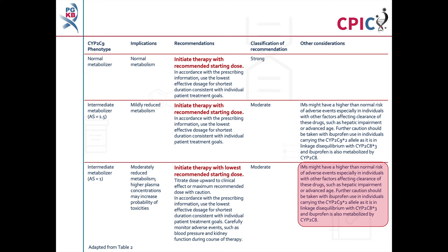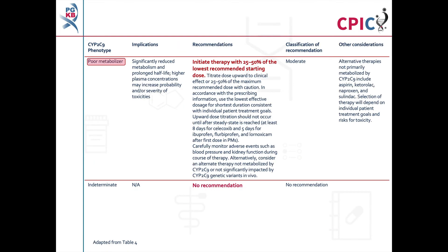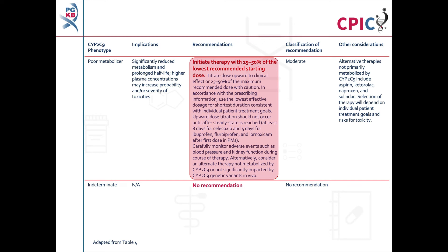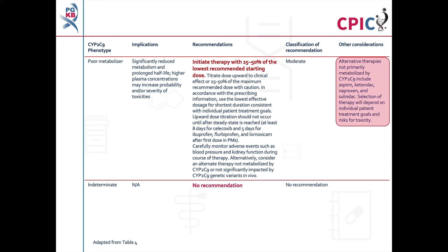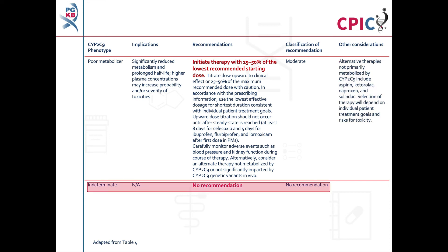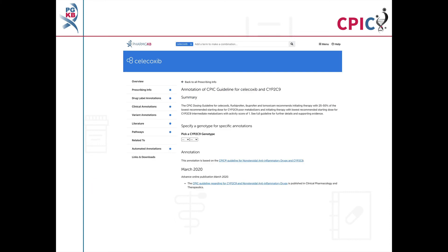CYP2C8 is also involved in the metabolism of ibuprofen. Patients with a CYP2C9 poor metabolizer phenotype will have significantly reduced metabolism of NSAIDs, which may increase the probability and/or severity of drug toxicity. These patients can begin therapy at 25–50% of the lowest recommended starting dose before titration upwards, or be given an alternative therapy; this is a moderate recommendation. Alternative therapies not predominantly metabolized by CYP2C9 include aspirin, ketorolac, naproxen, and sulindac. No recommendation is given for patients with a CYP2C9 indeterminate phenotype.